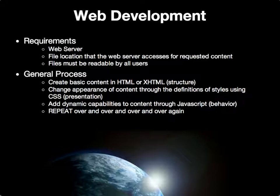The general process for creating a website starts with creating content using HTML or XHTML, where you define the content and its structure. Once the basic content and structure are in place, you customize the appearance through Cascading Style Sheets. Furthermore, you can add interactivity and dynamic behaviors using JavaScript. As you develop your website, you typically repeat this loop — adding content, styling it, and updating behaviors — over and over again.